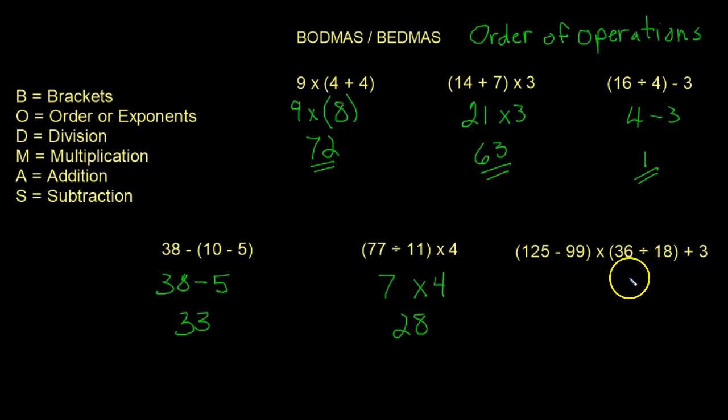All right, this one's a little bit harder, at least it looks a little bit harder, but in reality it's not that bad. 125 subtract 99 is going to be just 26.